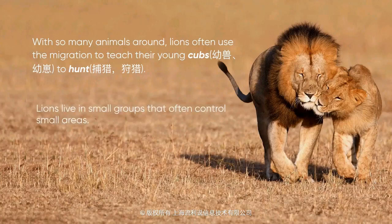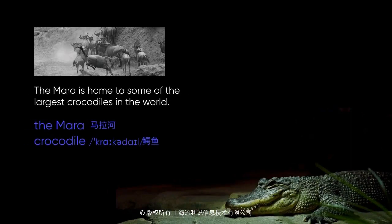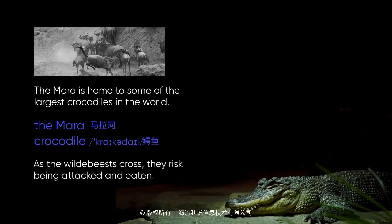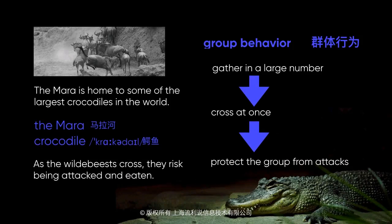Lions live in small groups that often control small areas. If one group enters another group's area, they will fight. So during the migration, lions will only feed on the animals in their area. Once those animals move on, the group must survive until the next migration comes. During the wildebeest migration, they must cross a large river called the Mara, which is home to some of the largest crocodiles in the world. As the wildebeest cross, they risk being attacked and eaten. Rather than cross one by one, the wildebeest first gather in large numbers on the edge of the river, then cross all at once, which helps protect the group. It is as if they know the danger and decide to face it together.